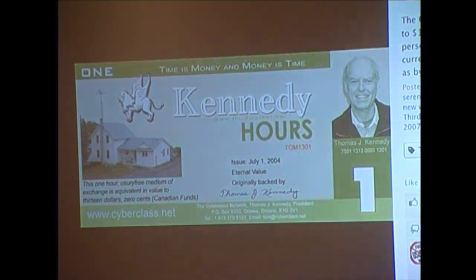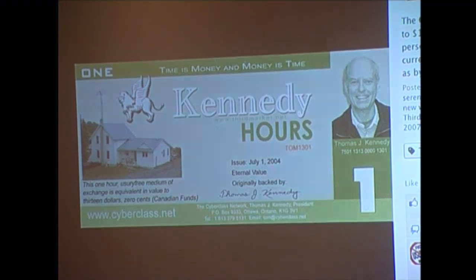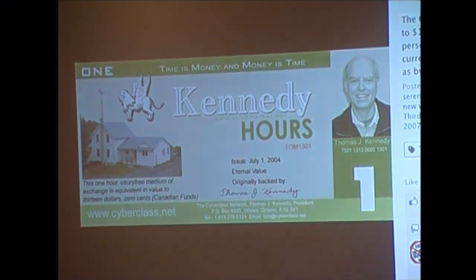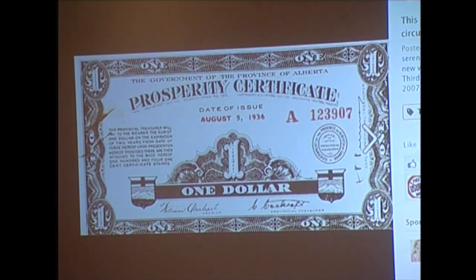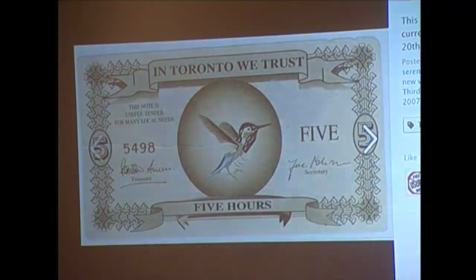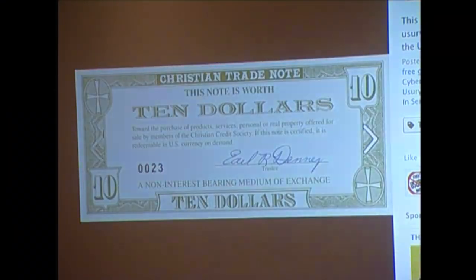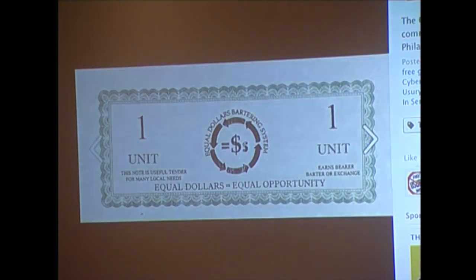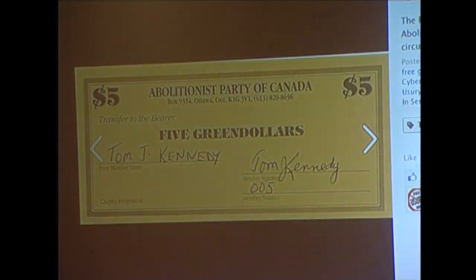This is my own personal currency — I call it Kennedy Hours. I liked Kevin Cox's presentation because we actually could create our own money, as long as we trust each other — we can measure it. This is a prosperity certificate from Alberta in the 1930s — 1936. They had lots of community currencies in North America in the 1930s, and our education books never told us about them. This is a Toronto one from the 1950s. This is a Christian credit note from the United States. Equal Dollars from Philadelphia, Pennsylvania.